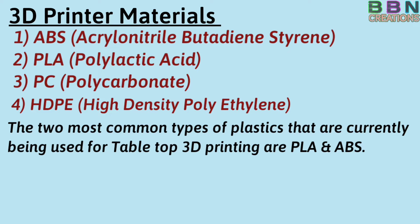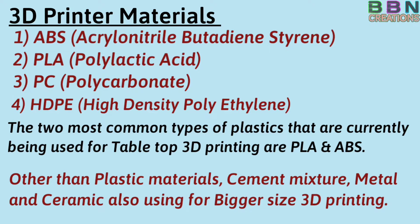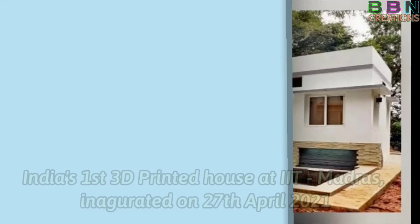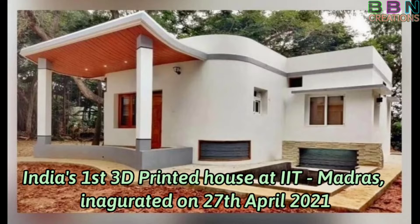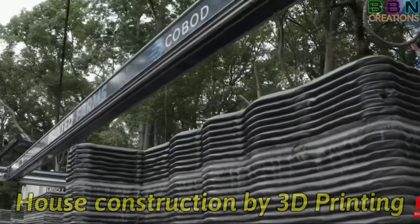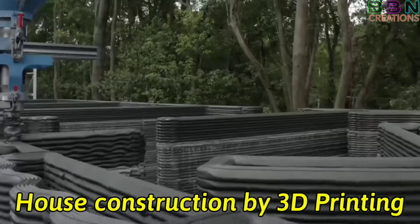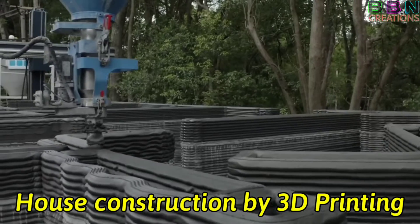The most common two plastics are PLA and ABS. Other than plastic materials, cement, metal, and ceramic are also used for bigger size 3D printing. India's first 3D printed house was built at IIT Madras. This is the technology of house construction by 3D printing.